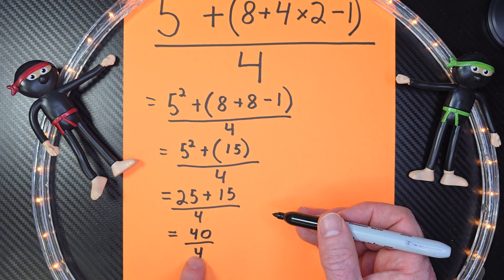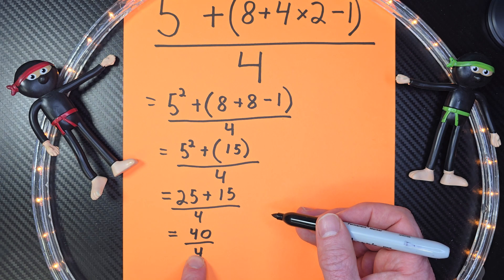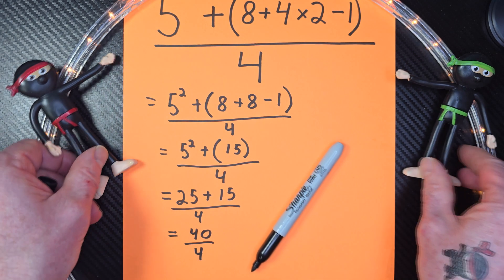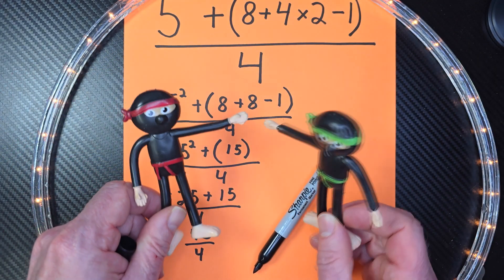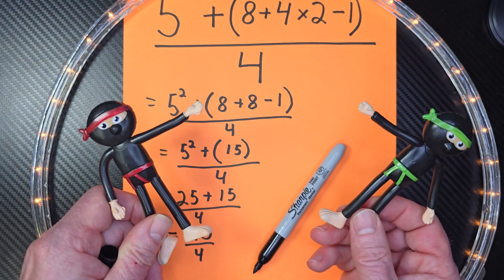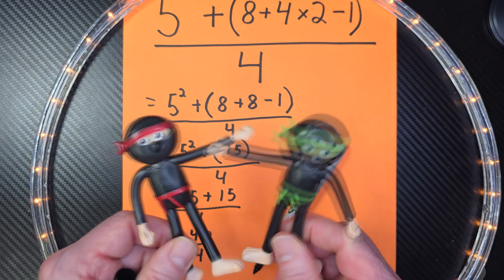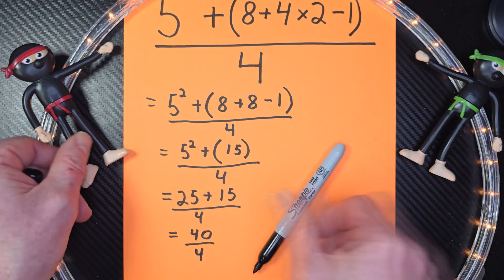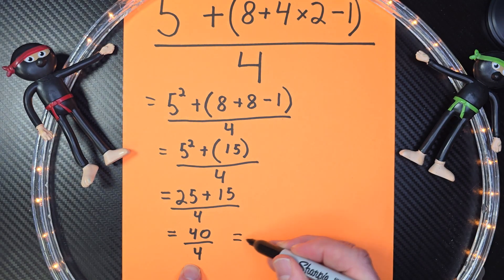Now, what is this? This is 40 divided by 4. What is it, my math ninjas? Let me see. Is it 3 and 4? I think it's 5. 10. We'll put it together. 5 and 5 is 10. It is 10.